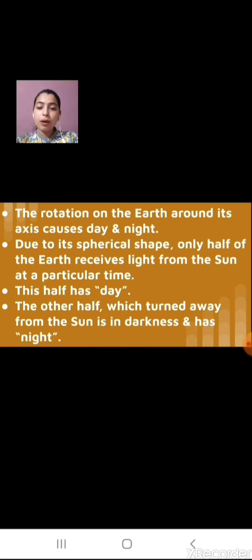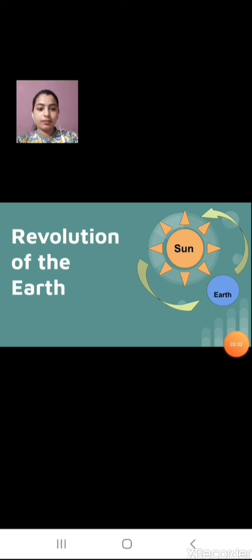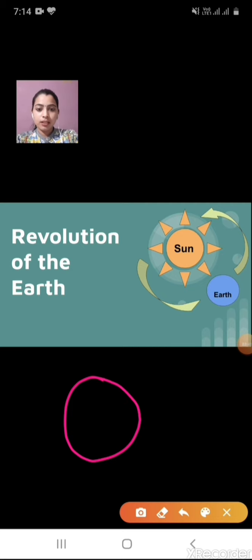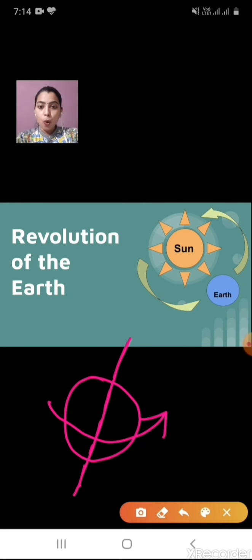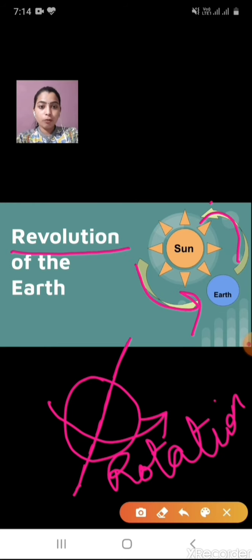In the previous video, we studied rotation and day and night. Now we will study the next movement of the earth — revolution. In rotation, earth rotates on its axis. But in revolution, earth revolves around the sun. Earth and other planets revolve around the sun. Here we will study the revolution of the earth.